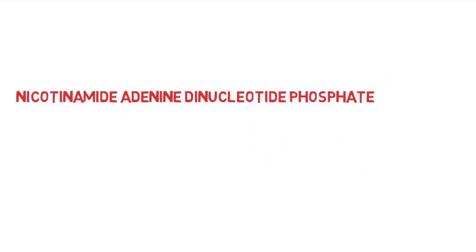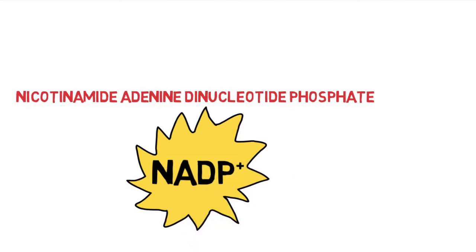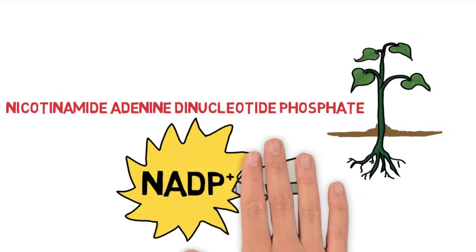Nicotinamide adenine dinucleotide phosphate. It's a molecule that's otherwise referred to as NADP. It's usually found as NADP+. The P is the crucial hint here.